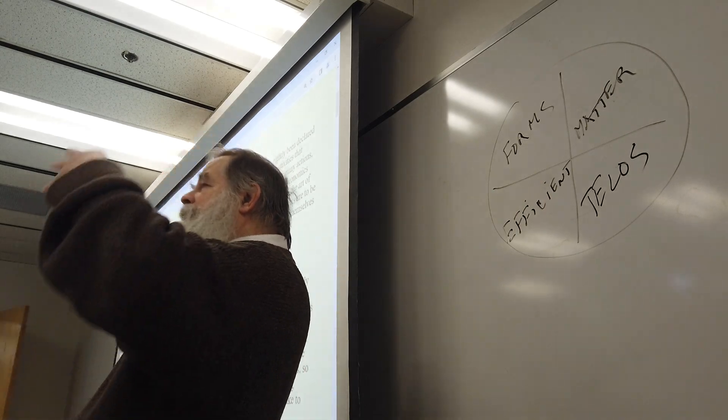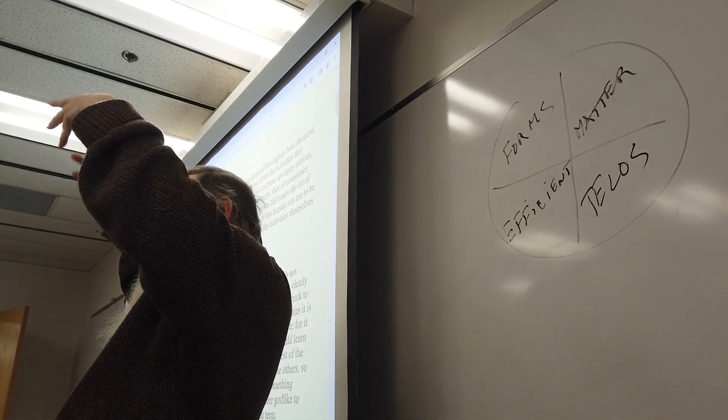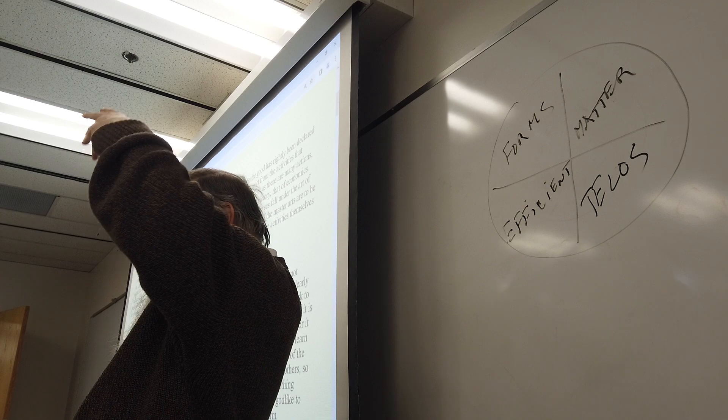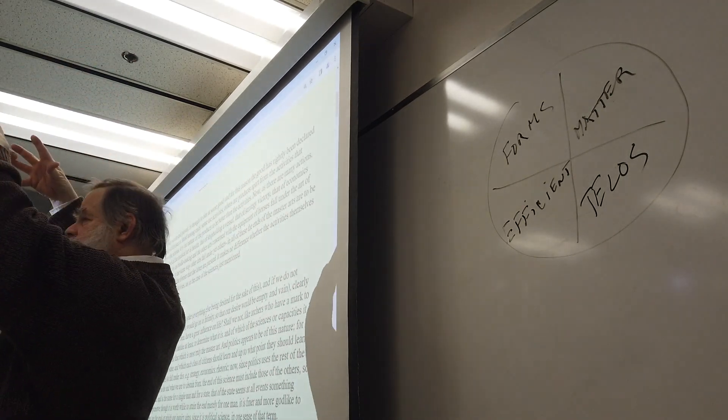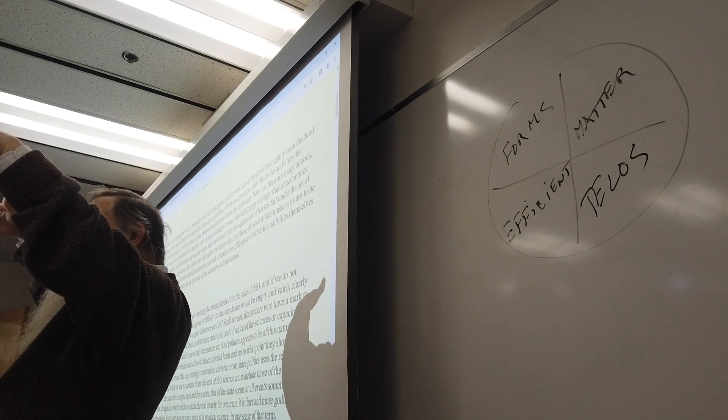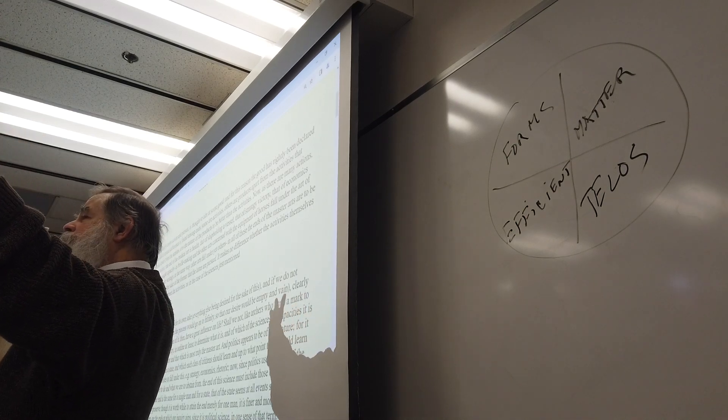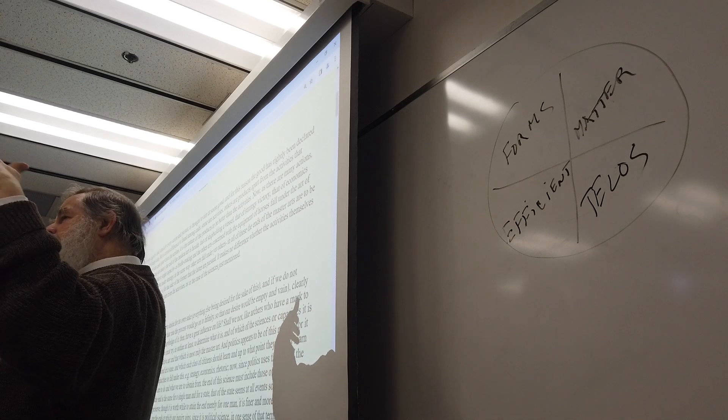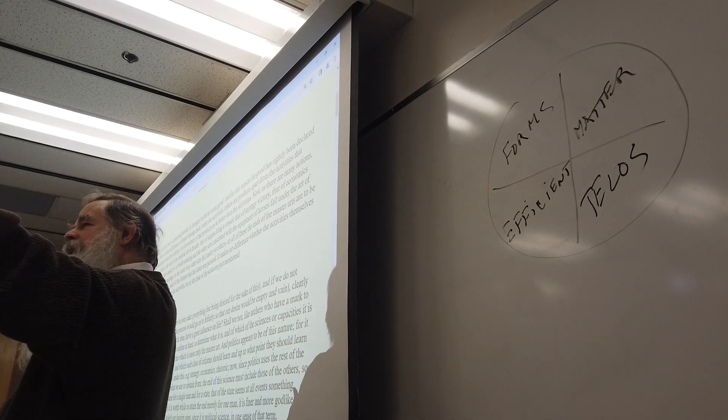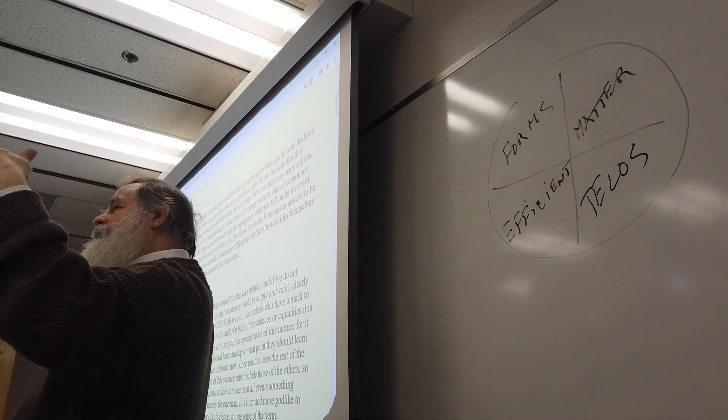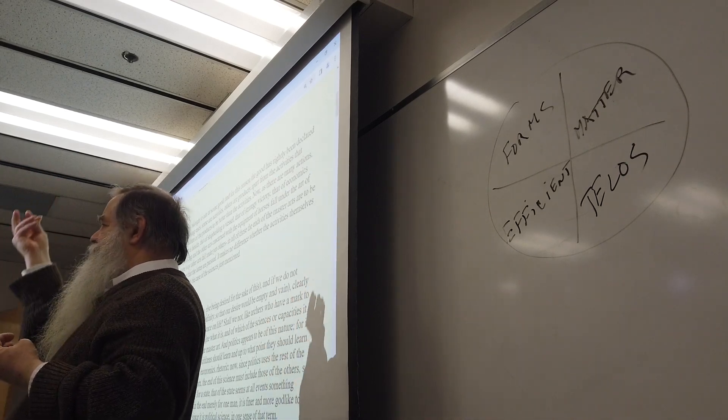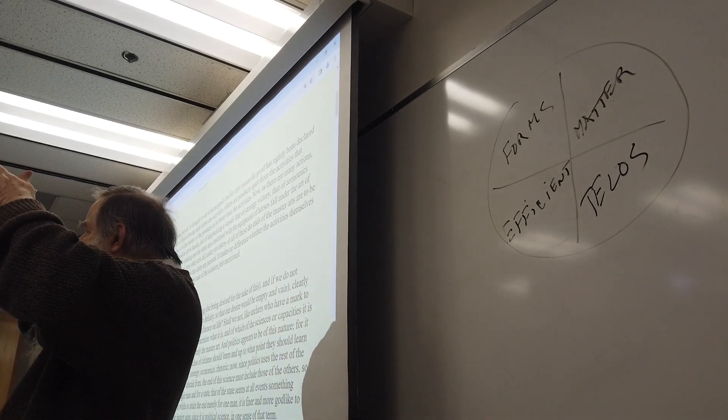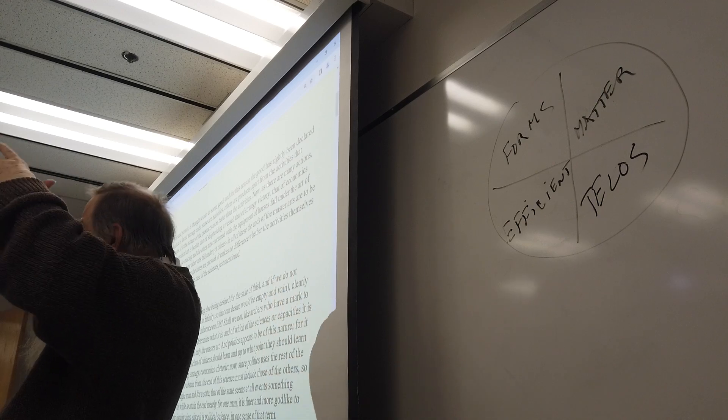For Plato, you get this ideal good, which we might also associate with the concept of God. There's just the one good. And out of that, we get all these things that we think of as good, and so the Platonists are trying to figure out what is it in this that makes it good?